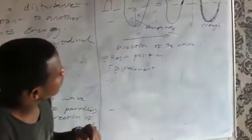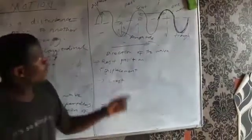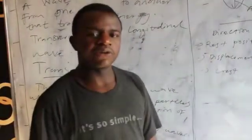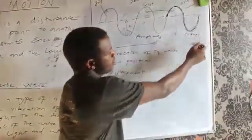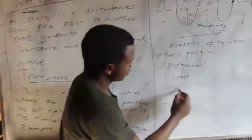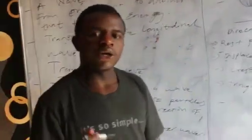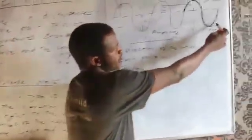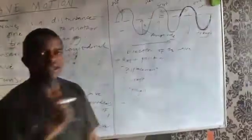The crest is defined as the highest point of the wave. Then we have the trough: the trough is defined as the lowest part of the wave. These parts form the troughs.